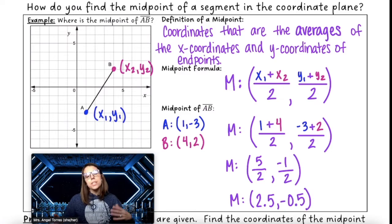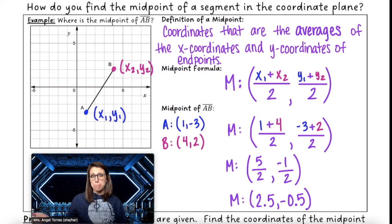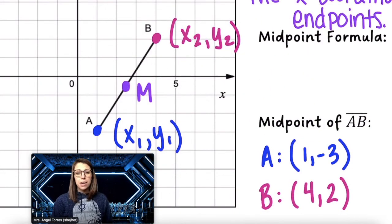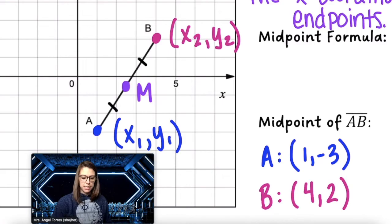There are a couple of ways to check our work and see if it makes sense. The first thing we're going to do is actually plot that point on our segment to see if it's actually the midpoint. It does appear that these are congruent segments — the distance from A to M is congruent to the distance from B to M.